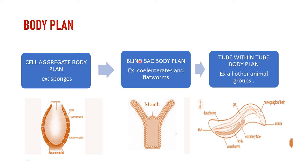Blind sac body plan is present in coelenterates and flatworms. Here the body has only one aperture called the mouth, through which both ingestion and excretion occur. So this is a blind sac body plan.